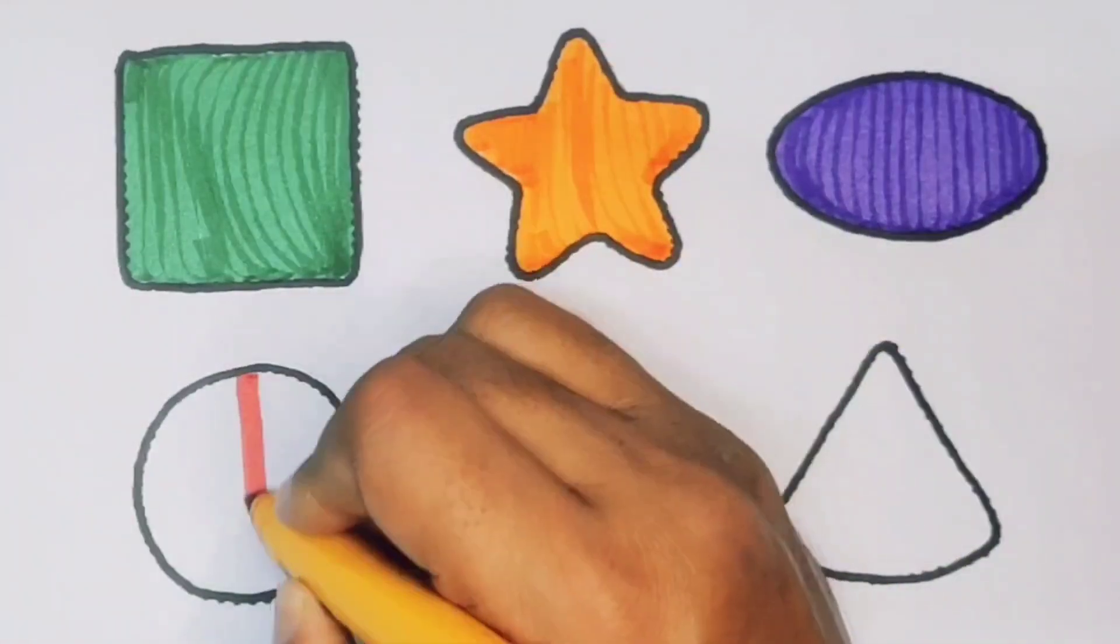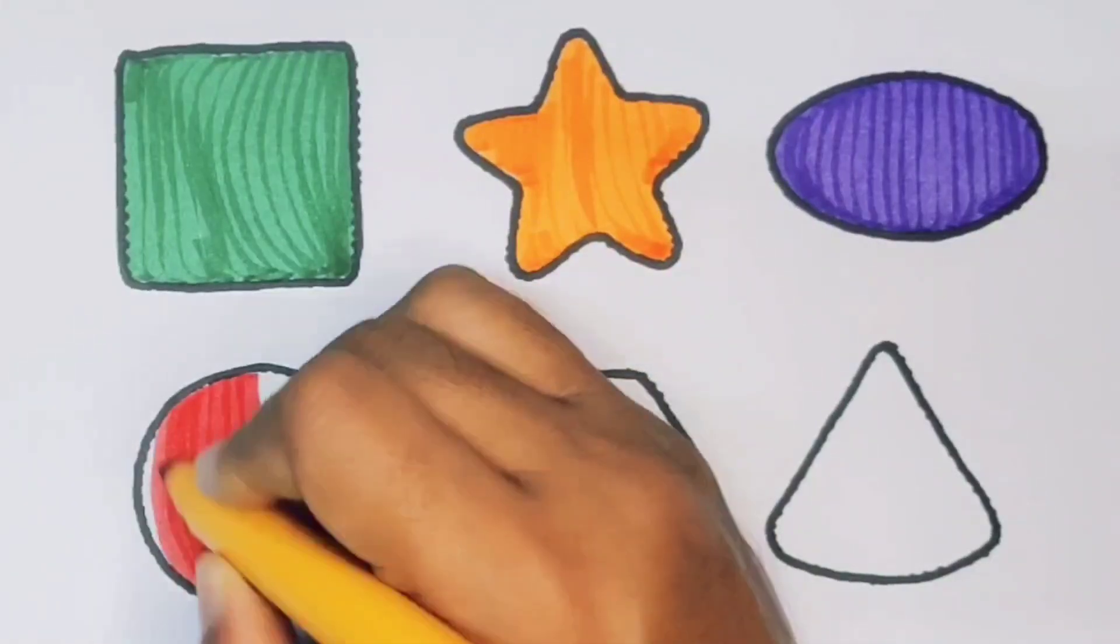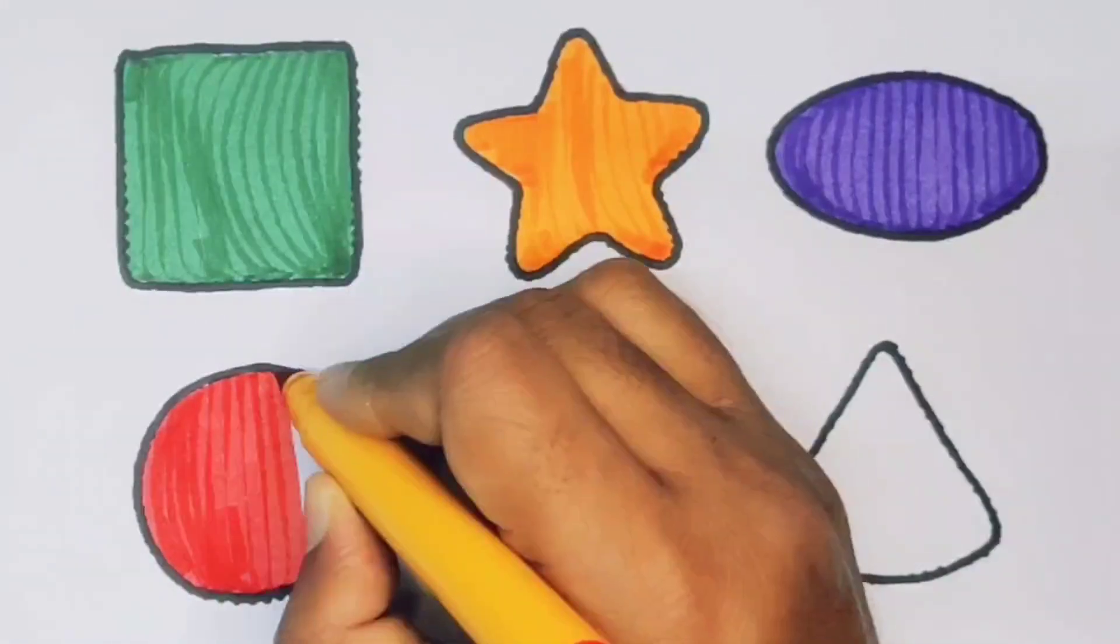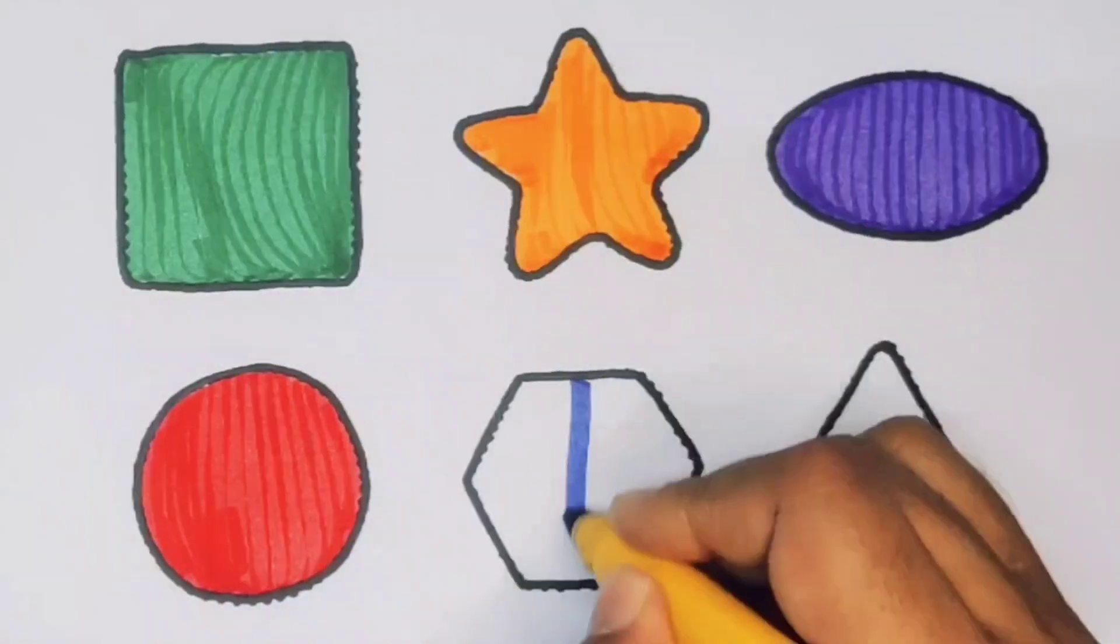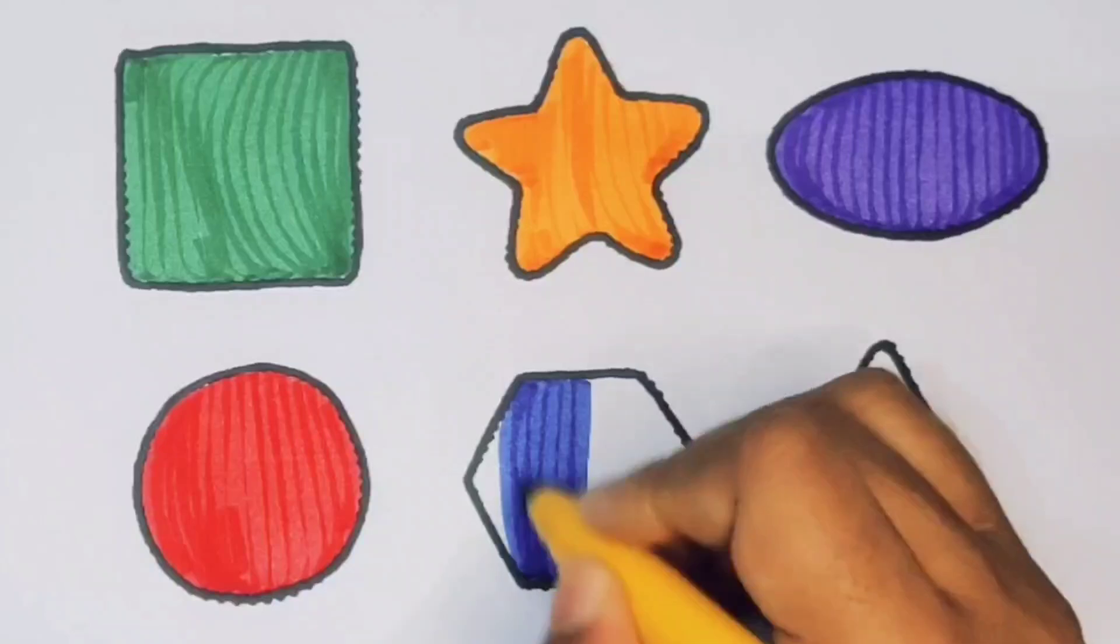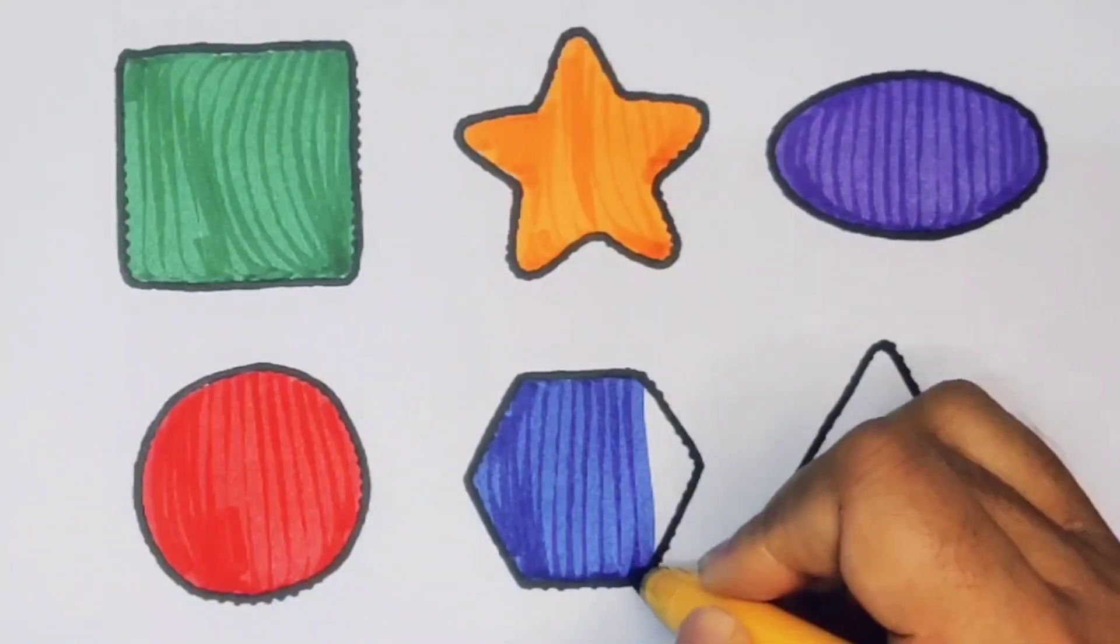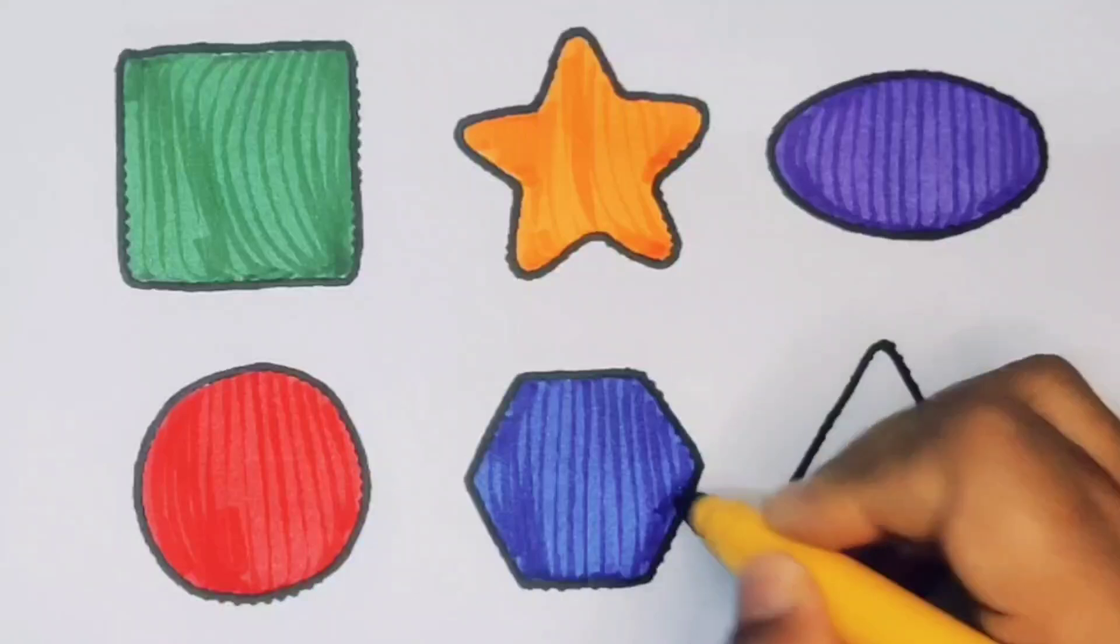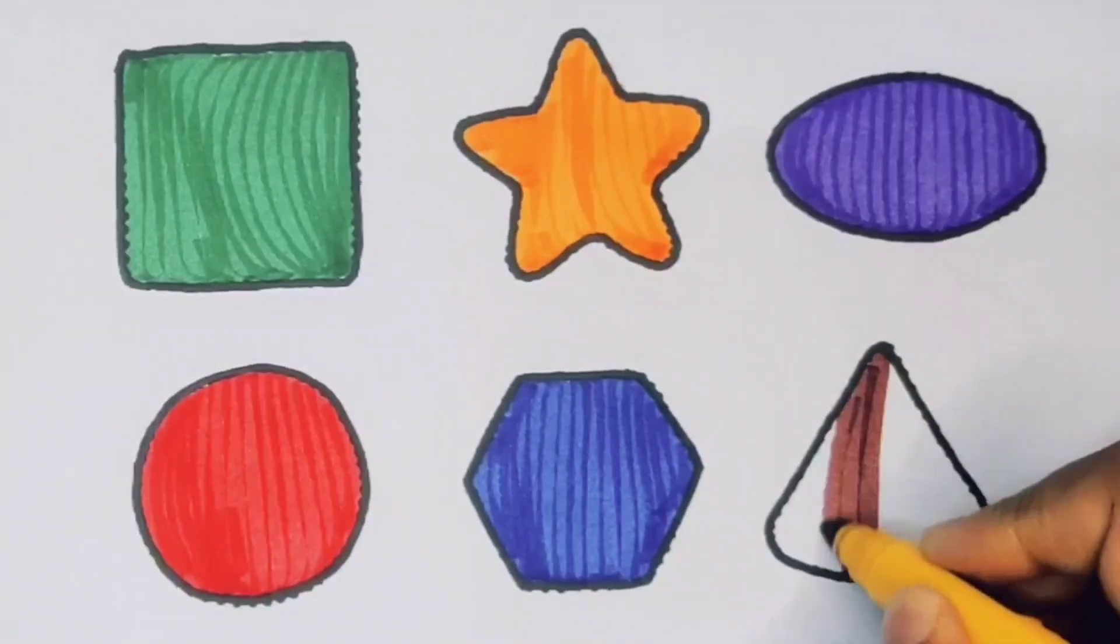Next, red color circle. Next, blue color hexagon. Next, chocolate color triangle.